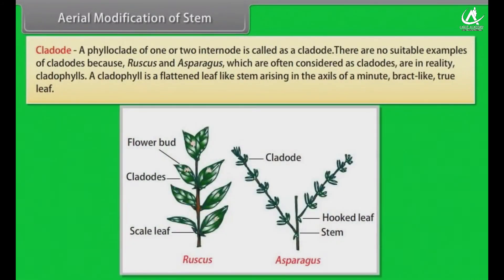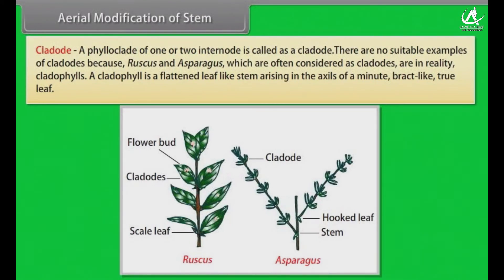A phylloclade of one or two internodes is called a cladode. Ruscus and Asparagus, which are often considered as cladodes, are in reality cladophylls. A cladophyll is a flattened leaf-like stem arising in the axils of a minute bract-like true leaf.